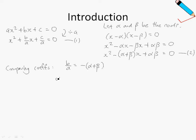Therefore, my sum of roots, which is alpha plus beta, is simply negative b over a. So this is also known as the sum of roots.